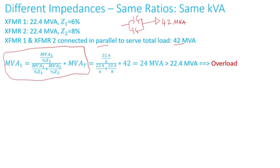Plugging in the numbers, transformer one will carry 24 MVA out of the 42 MVA load. Notice that transformer one is only rated 22.4 MVA, so transformer one in this case will be overloaded.